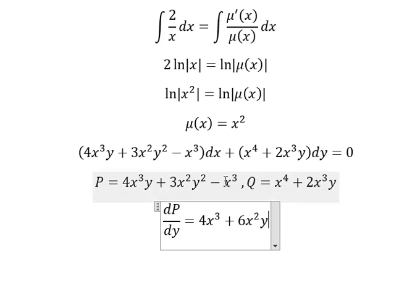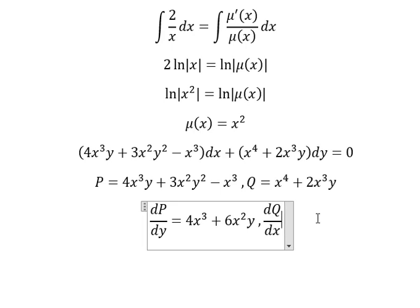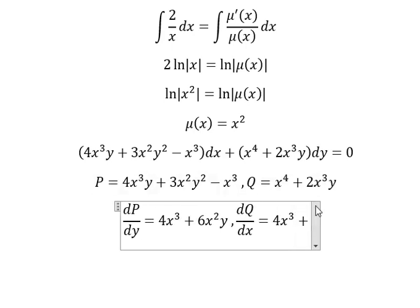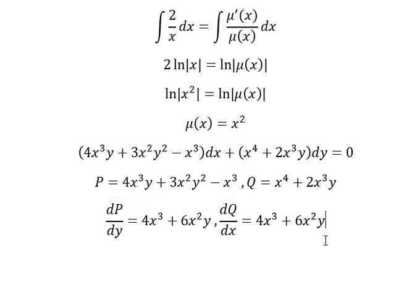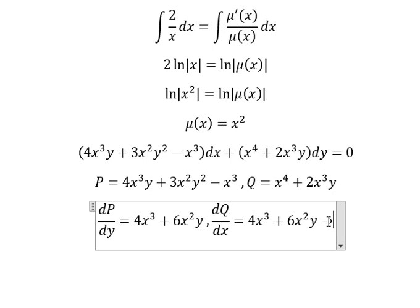This one — we don't have y, so we get 0. Now dQ over dx: we have 4x to the power of 3; first derivative of x to the power of 3 gives number 3; and x squared — number 3 with number 2, we have number 6. And we see that this one equals to this one, so we can use the exact method.